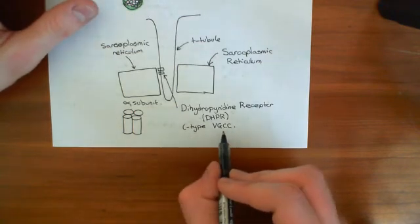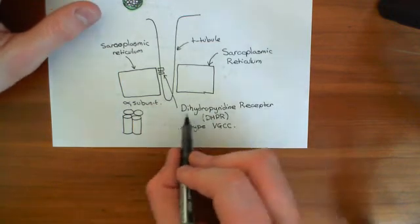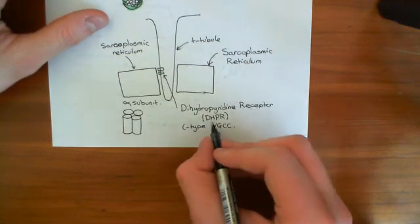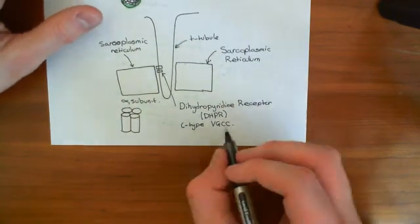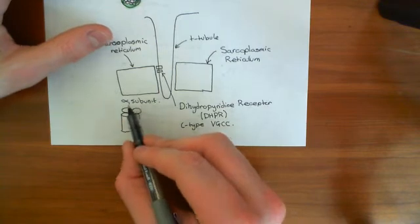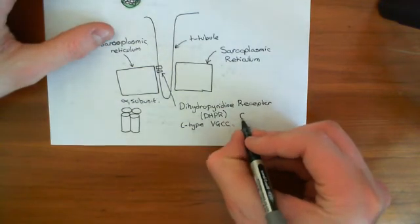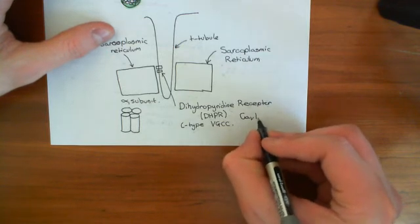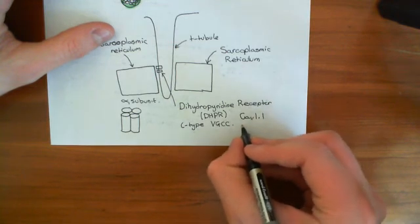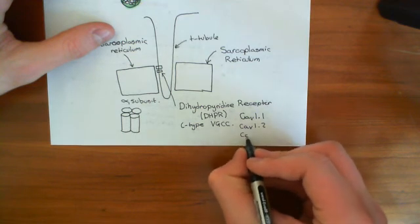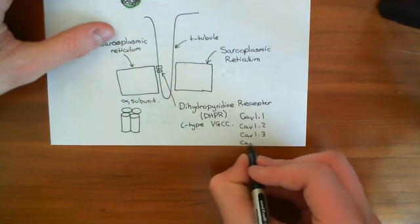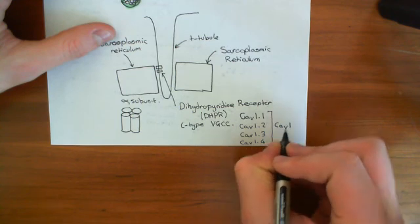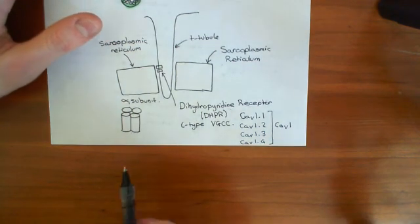If you are referred to as an L-type voltage-gated calcium channel — which is what a dihydropyridine receptor is — it means that the gene used to code for your alpha-1 subunit is in the CAV1 family. CAV stands for voltage-gated calcium channel. The CAV1 family consists of four different genes: CAV1.1, CAV1.2, CAV1.3, and CAV1.4. These all code for alpha-1 subunits that can be used to make a functional voltage-gated calcium channel.